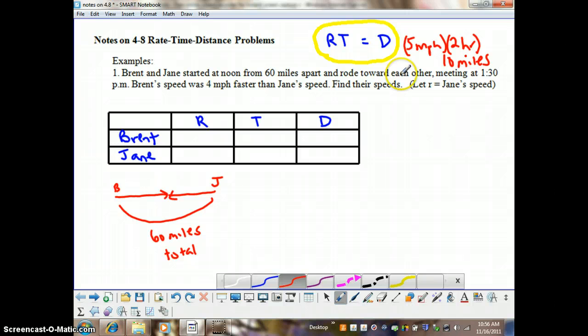And they are riding towards each other, and they're meeting at 1:30 p.m. Brent's speed was 4 miles per hour faster than Jane's speed, and we need to find their speeds. And there's a hint here to let Jane's speed equal r.